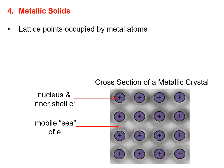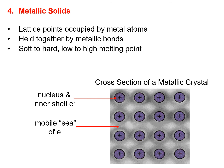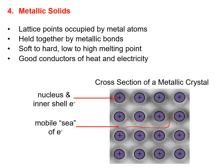For metallic solids, the lattice points are occupied by metal atoms. They are held together by metallic bonds. They can be soft or hard, and have low or high melting points depending on the element. They are all good conductors of heat and electricity. You can see in this cross-section of a metallic crystal: the plus sign represents the nucleus and inner shell of an atom, and surrounding it everywhere is the mobile sea of electrons. The electrons are free to move around throughout the metallic solid, so they can conduct heat and electricity efficiently.